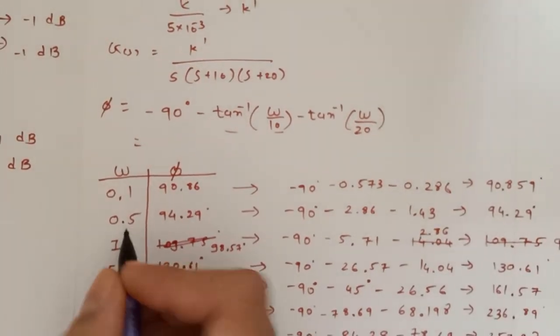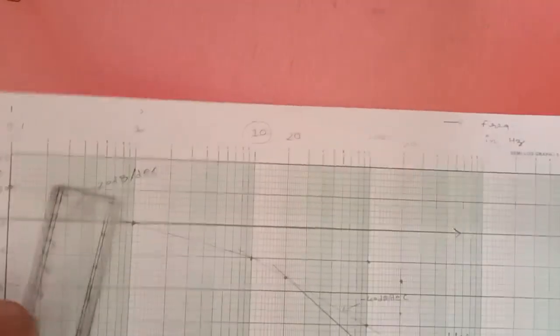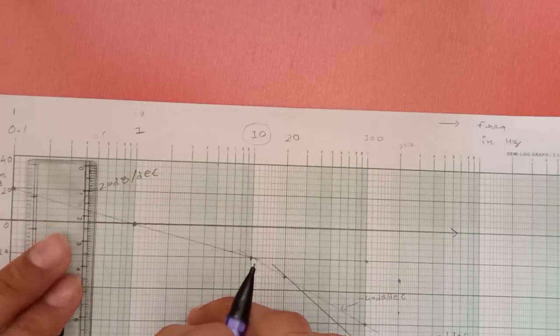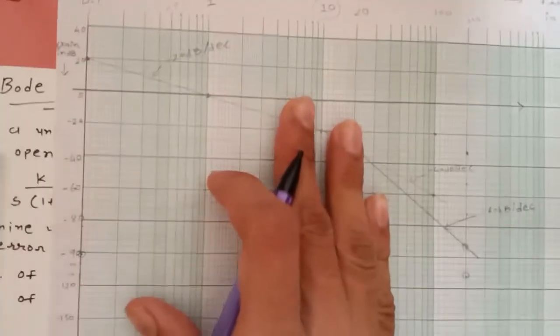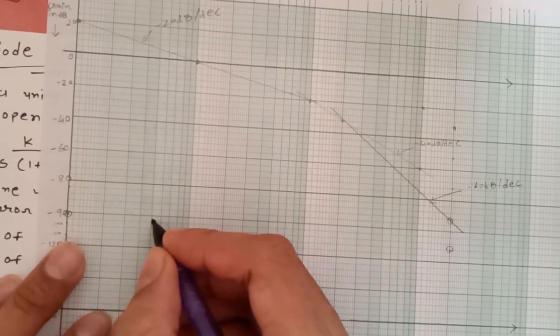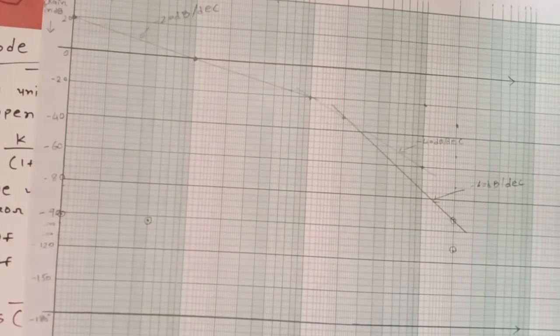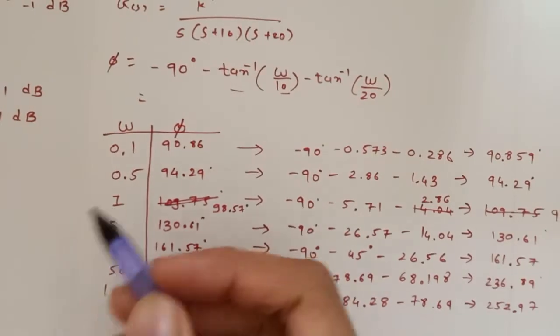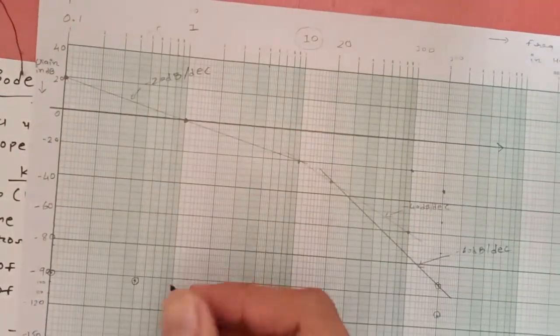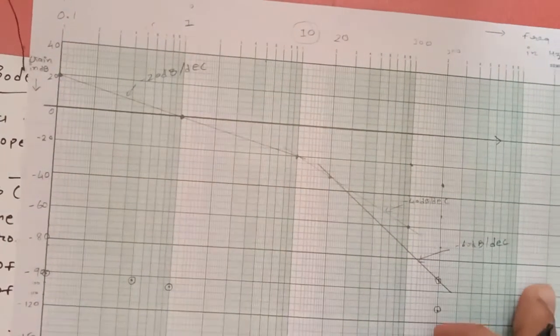For another frequency, that is 0.5, 94.29. At 0.5 it means at this value this is the point 0.5 and it is at 0.5, 94.29, such as at this point. For third point or third frequency at 1, 98.57. At 1, 98.57.